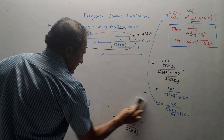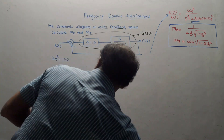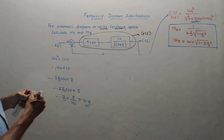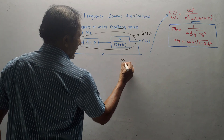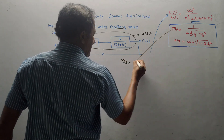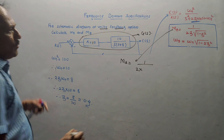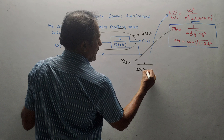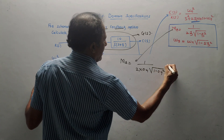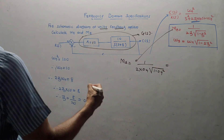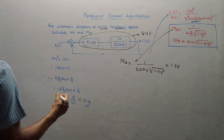Now the next part is similar to the earlier sums. Once we have the values of ζ and ωn, we directly apply the formulae. For Mr: 1 upon 2 × 0.4 × √(1 − 0.4²). The value of Mr is 1.36.